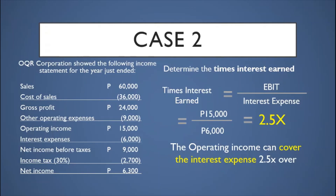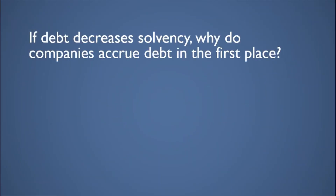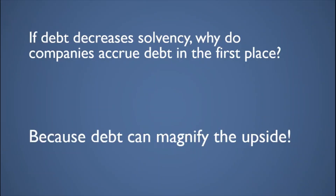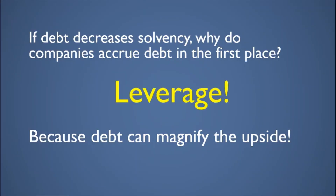The higher the times interest earned ratio, the better the company's chance of survival. This raises the question: if debt decreases solvency, why do companies incur debt in the first place? The answer: because debt can magnify the upside. We call this principle leverage.